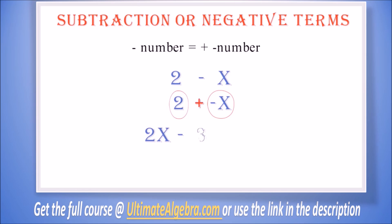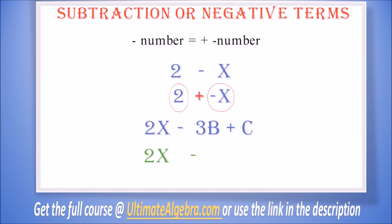With this in mind, we can say that the terms in 2x minus 3b plus c are 2x, negative 3b, and c. We change the minus to plus negative. Hope everything is clear up to this point.